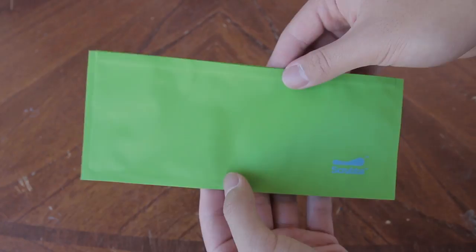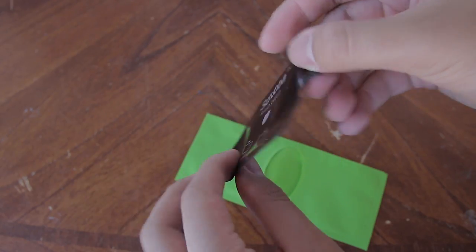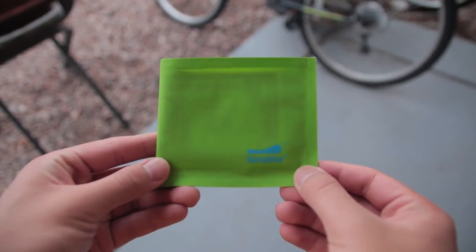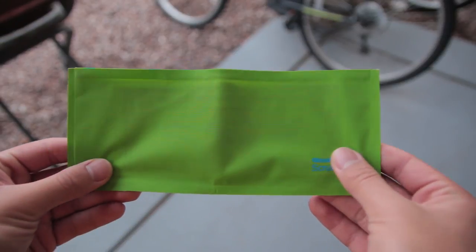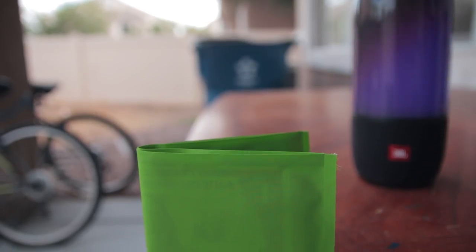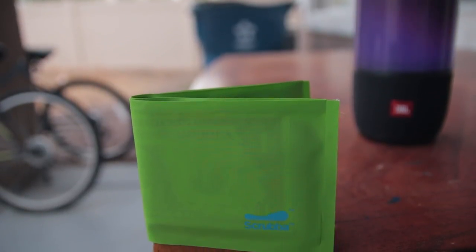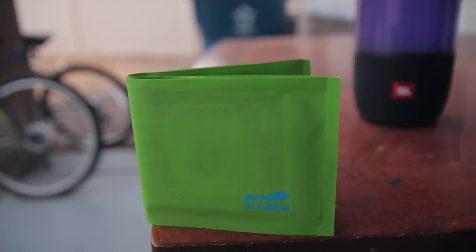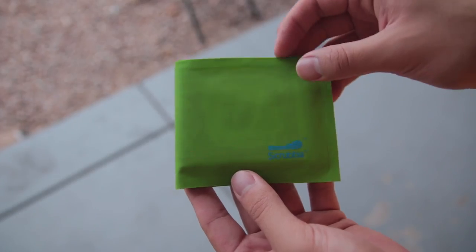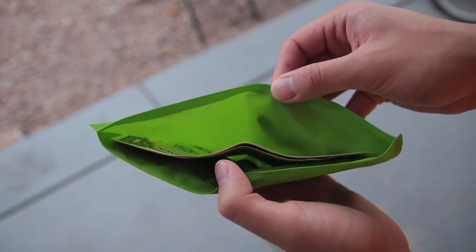you get a Scrubba card, the wallet itself, and an RFID blocking sleeve. This wallet is made with excess material from their Scrubba wash bag. This is an amazing idea because instead of that excess material going to waste, it's being put to good use by upcycling them into wallets. This makes it environmentally friendly which is one good reason to purchase this wallet.